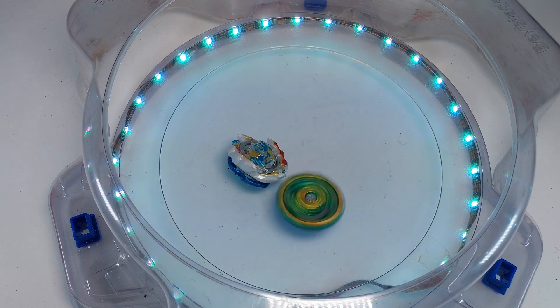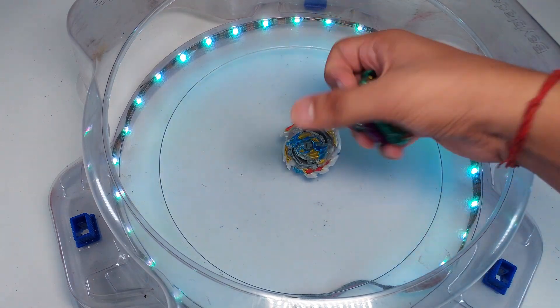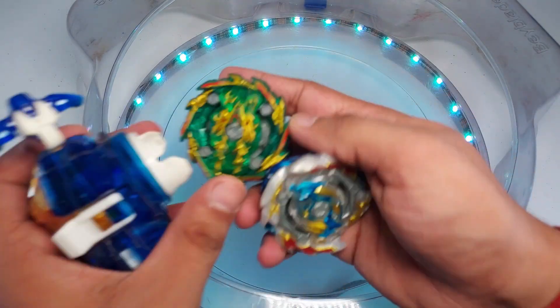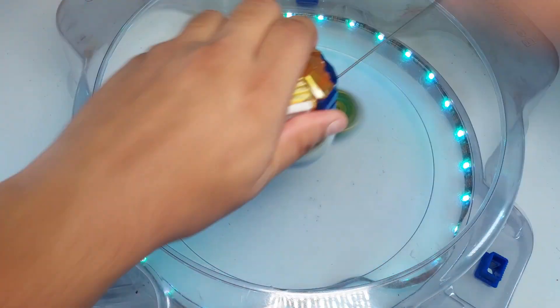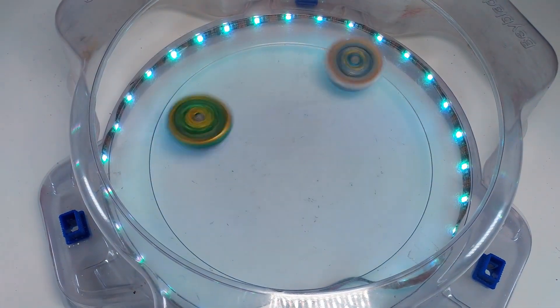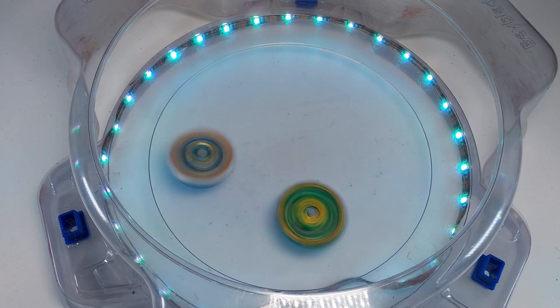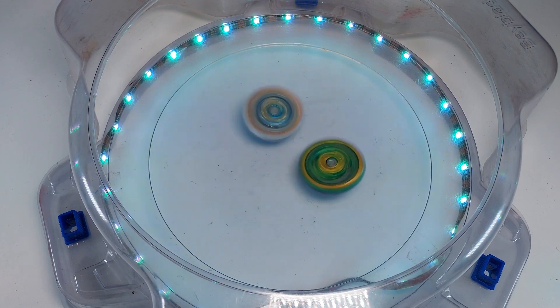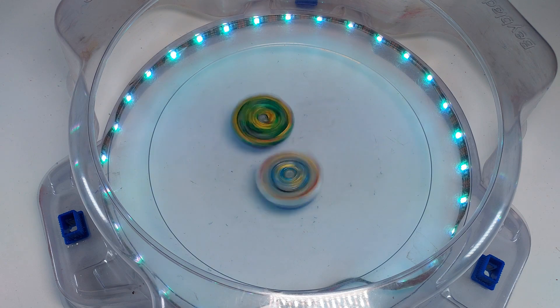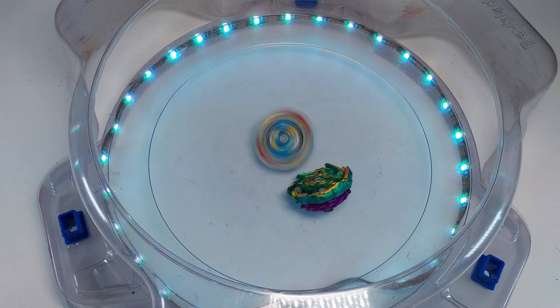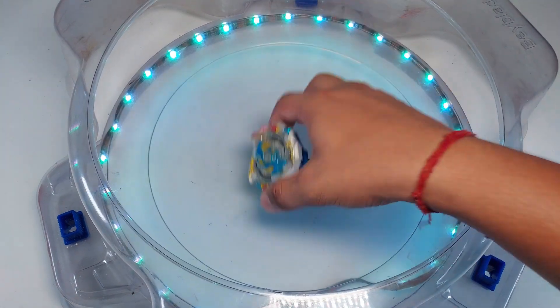And guys, that next point goes to Bushin Ashura. So both are having one point each. Let's see who takes the next one. It could be anyone's battle. Looks like this is gonna be a close one. Ace Dragon takes the win! So two points to Ace Dragon, Bushin Ashura one.